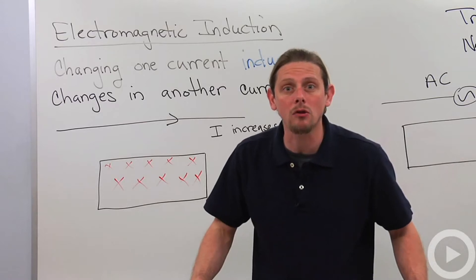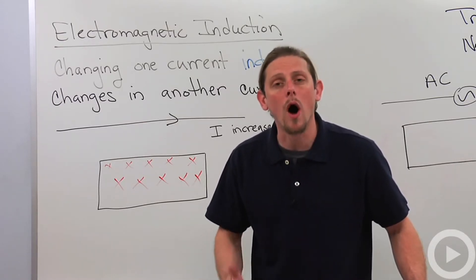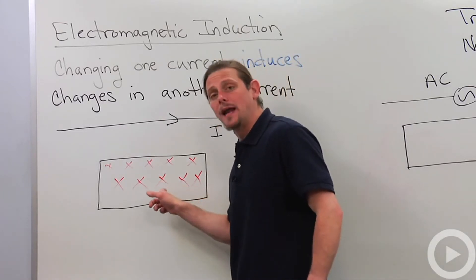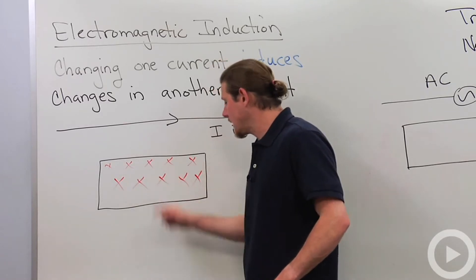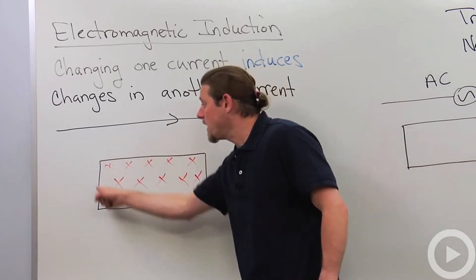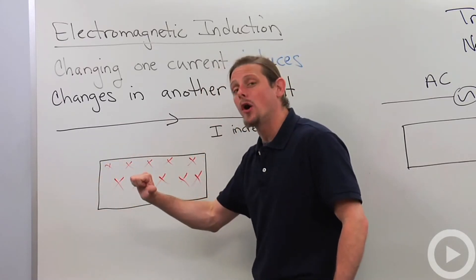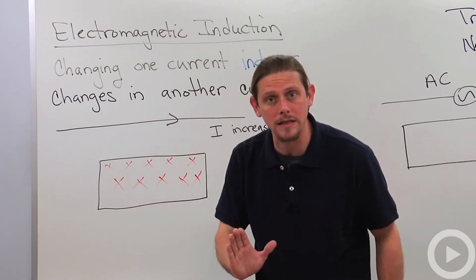Faraday-Lenz systems don't like change. It wants it to remain the same. So the increase of the magnetic field into the board generates a current in this loop such that the magnetic field generated by this current points out of the board to try to cancel that increase in magnetic flux.